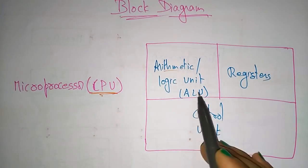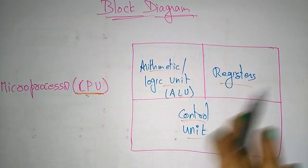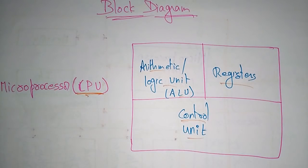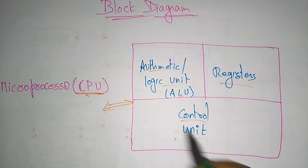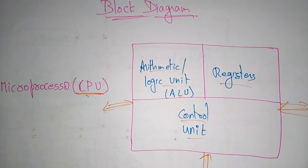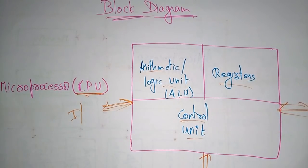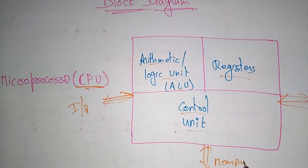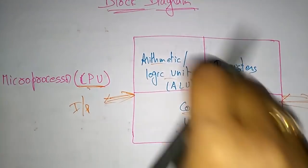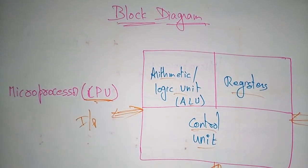A microprocessor is a CPU — central processing unit — which performs all operations. It consists of arithmetic logic unit, registers, and the control unit, which controls all input/output, memory, ALU, and registers. The main difference is: a processor has only ALU, registers, and control unit, and all other parts like input devices, output devices, and memory are connected externally outside the chip. Whereas in a microcontroller, all components are integrated within the single chip.